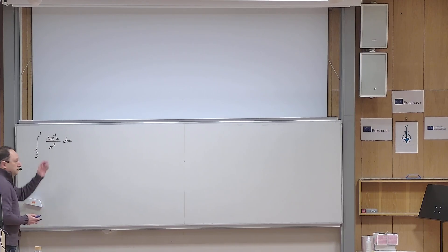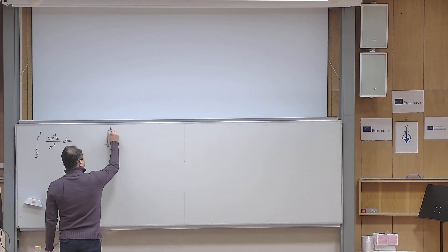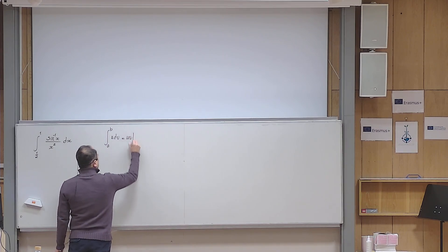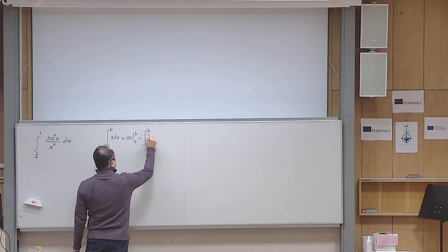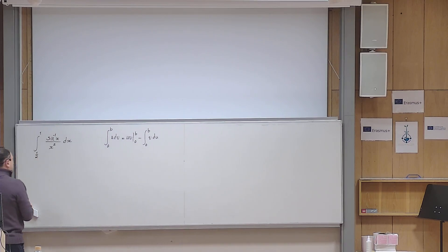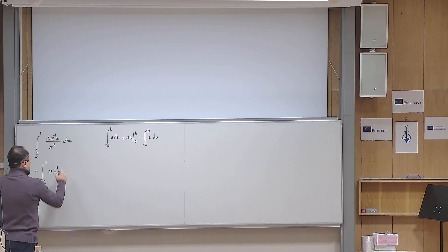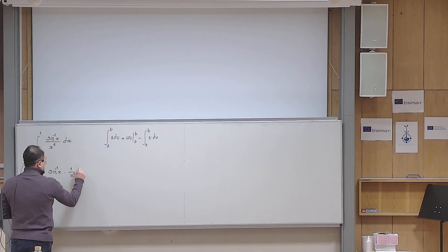I want to use the method of integration by parts to calculate this integral. The formula is: integral of u dv from a to b can be calculated as u times v from a to b minus integral from a to b of v du. In order to use this formula, I will rewrite my integral as integral from 1/2 to 1 of sine inverse x multiplied by 1 over x squared dx.